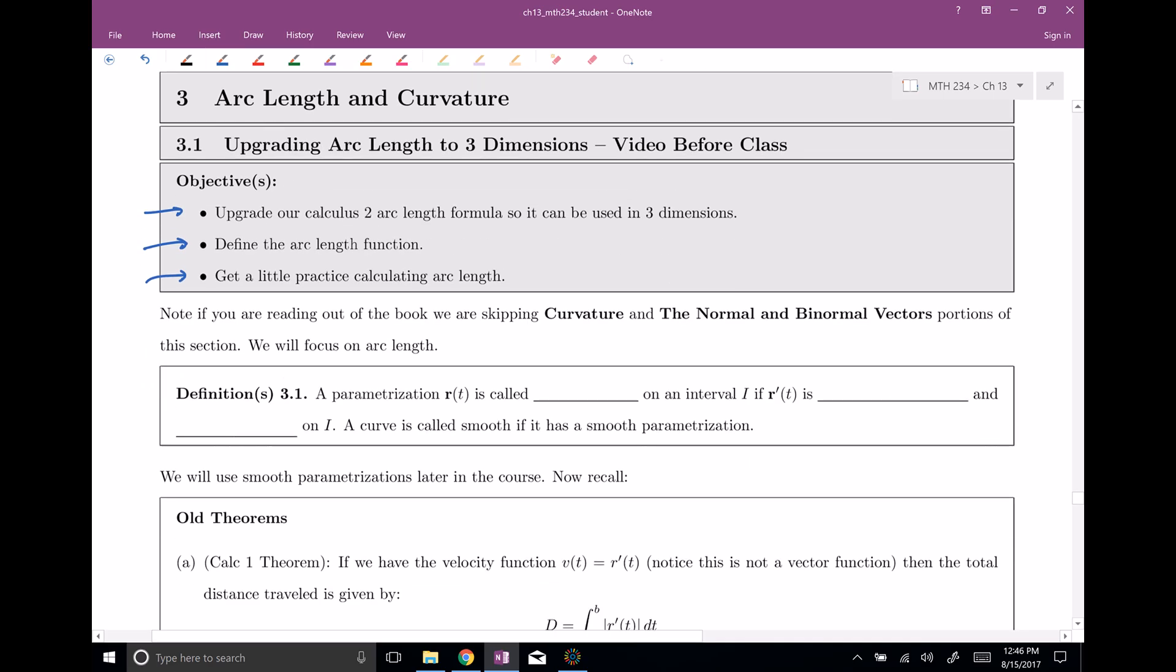All right, so first of all, definition. We have a nice parametrization, R of T. We want this really to be smooth. So we want a nice, smooth parametrization on some specified interval, probably the one that we're gonna be integrating over, so some interval I. And it's gonna be smooth if the derivative is continuous, and the derivative is not equal to zero on the interval I. If that's the case, the curve is called smooth, and this is a smooth parametrization.